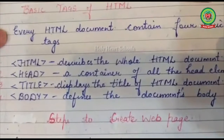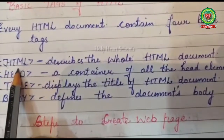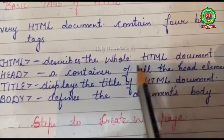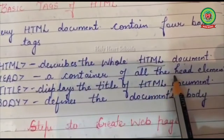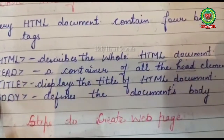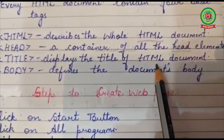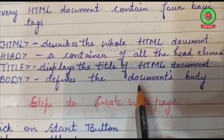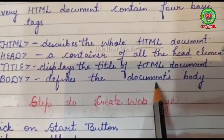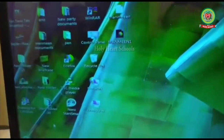Now let's discuss the basic tags of HTML. Every HTML document contains four basic tags. First is the html tag, which describes the whole HTML document. Next is the head tag — a container for all head elements. Then the title tag, which describes the title of the document. Finally, the body tag, which defines the document body and structure.